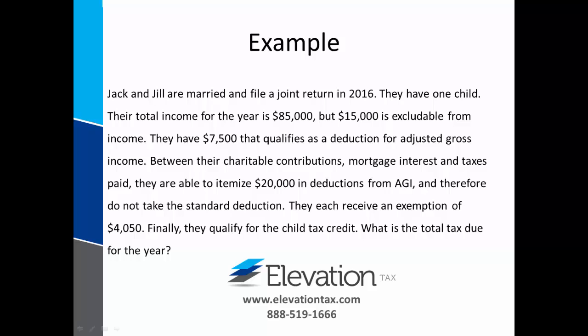Here is a basic example of using the tax formula — for illustrative purposes only. Jack and Jill are married and file a joint return in 2016. They have one child. Their total income for the year is $85,000, but $15,000 is excludable from income. They have $7,500 that qualifies as a deduction for adjusted gross income. Between their charitable contributions, mortgage interest, and taxes paid, they are able to itemize $20,000 in deductions from AGI and therefore do not take the standard deduction. They each receive an exemption of $4,050 and take one for their child. Finally, they qualify for the child tax credit. What is the total tax due for the year?